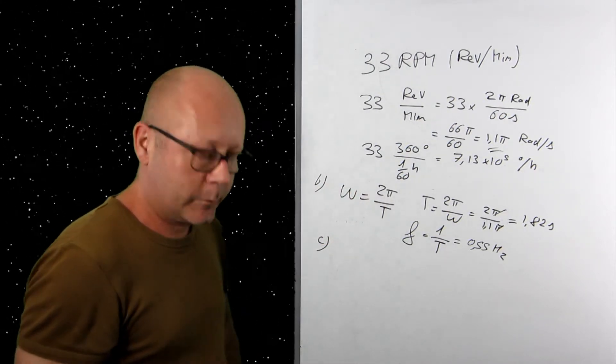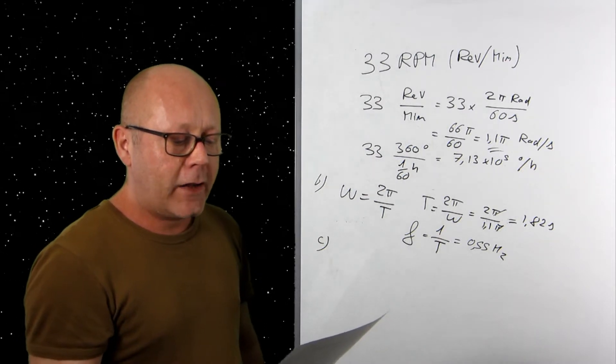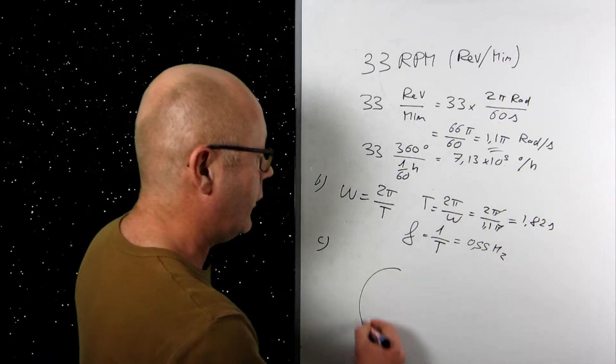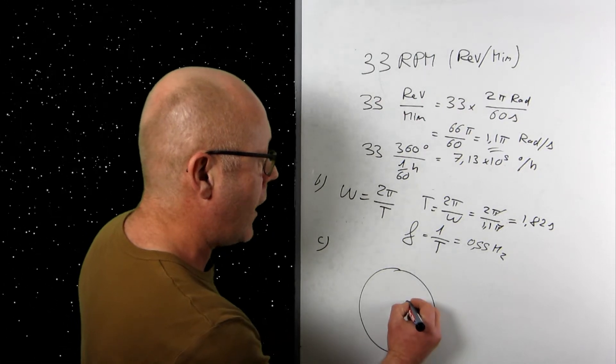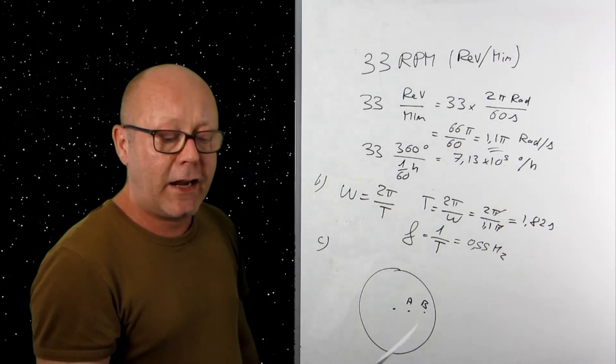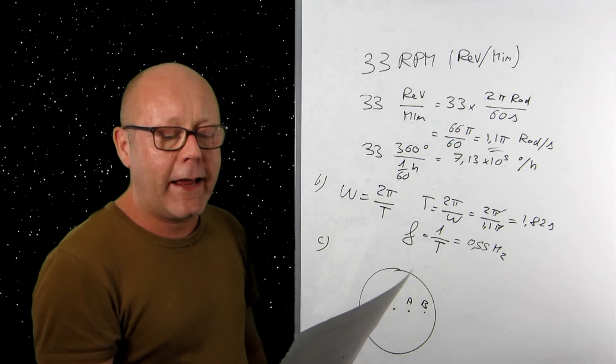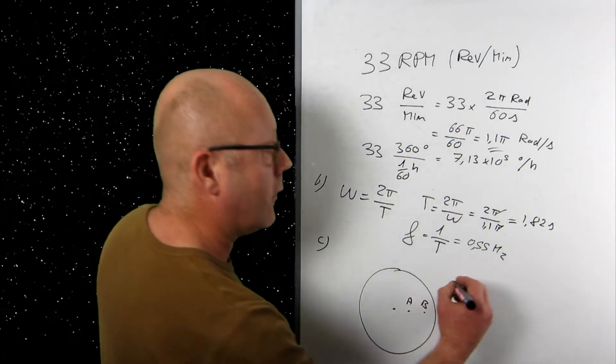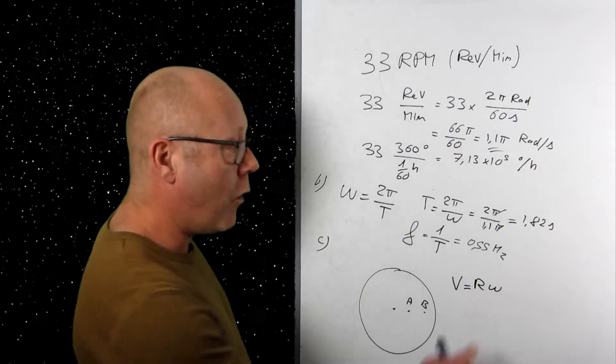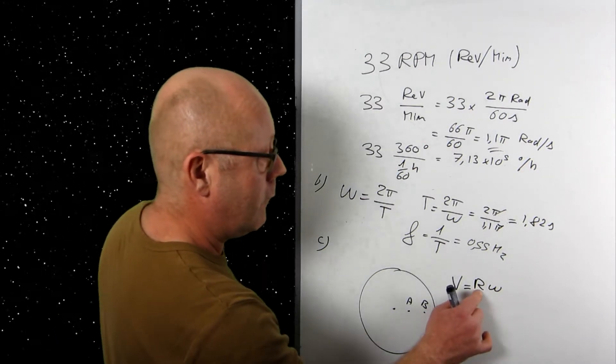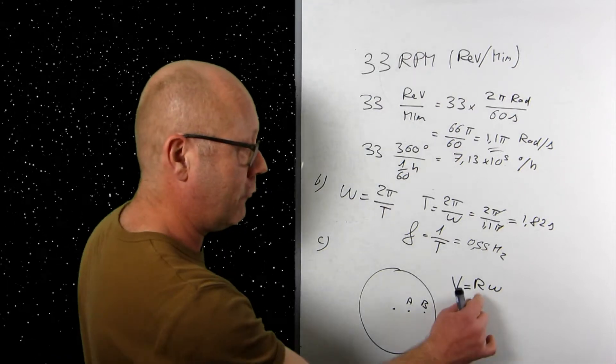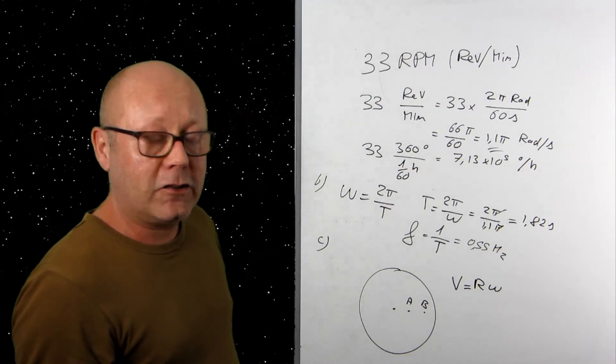Now, question C. Points A and B are located on the record. The distance between the center of the record is double for B than it is for A. So here's your record, the center. Here you have point A. And here you have point B. Does the linear velocity of point B change compared to that of point A? And why? Well, the definition of the velocity in a circular motion is R omega.